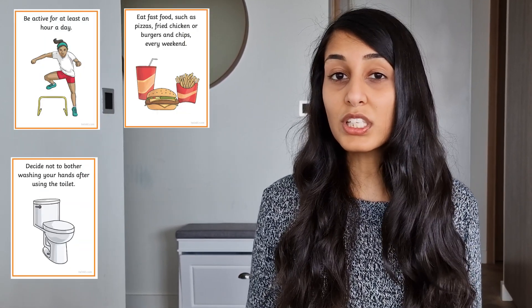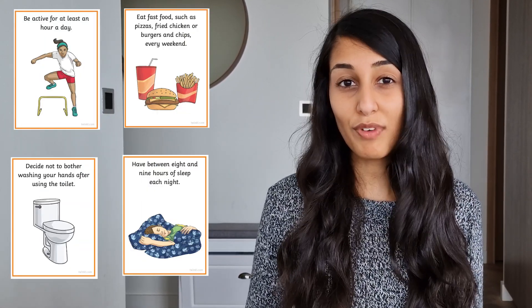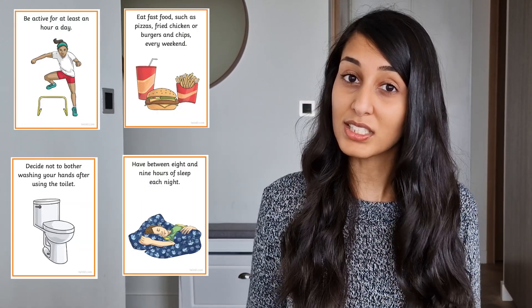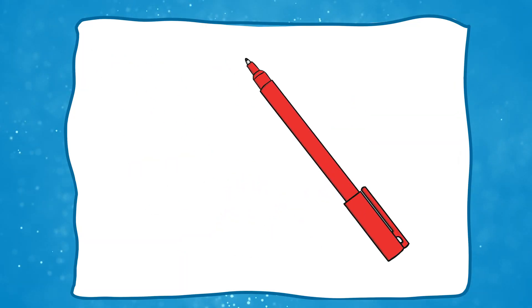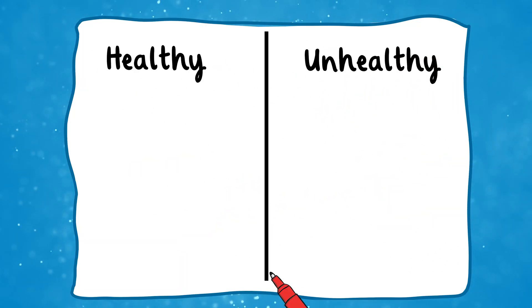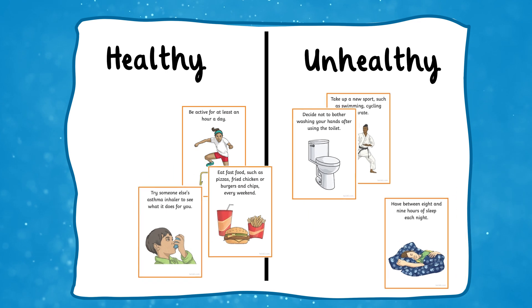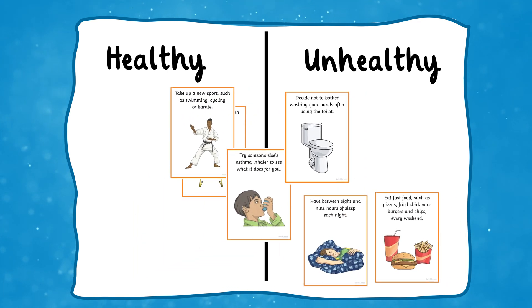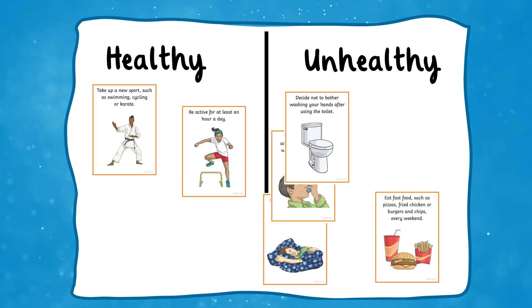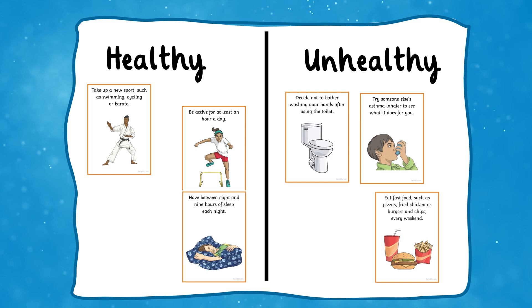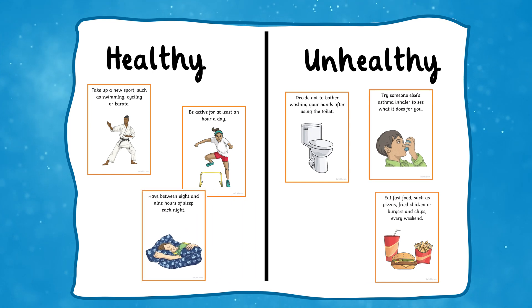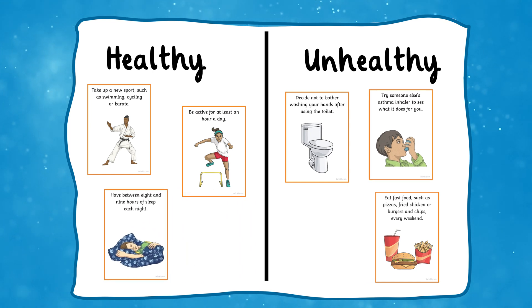You could also use our Balanced Lifestyle Sorting Cards to teach children the importance of having a balanced lifestyle. Children can group them or sort them into which promotes a balanced lifestyle and those which would hinder healthy living in some way. Topics covered include healthy eating, exercise, personal hygiene and harmful substances.